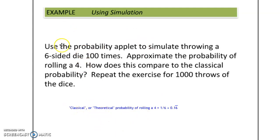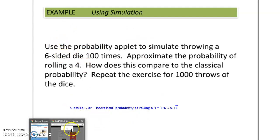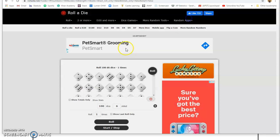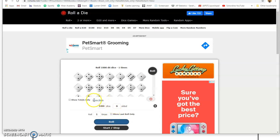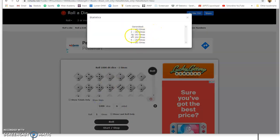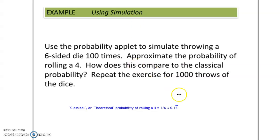The classical probability will always be the same. Let's see what would happen if we do it not 100 times but 1,000 times. I was able to roll a four 164 times, and 164 out of 1,000 is 0.164, which is much closer to 0.16 repeating. This is an example of having many more throws being much closer to the theoretical probability — an example of the law of large numbers.